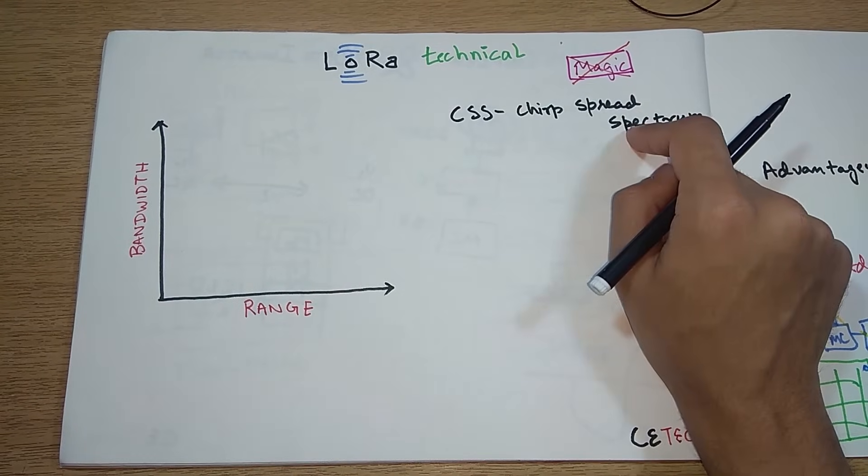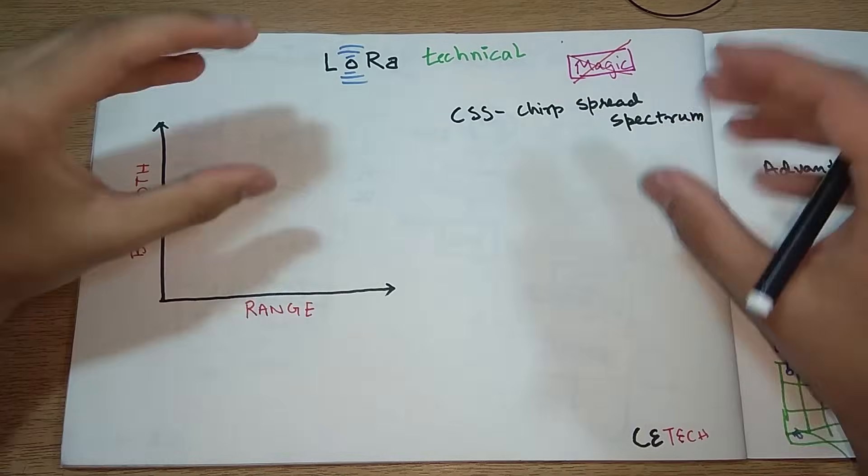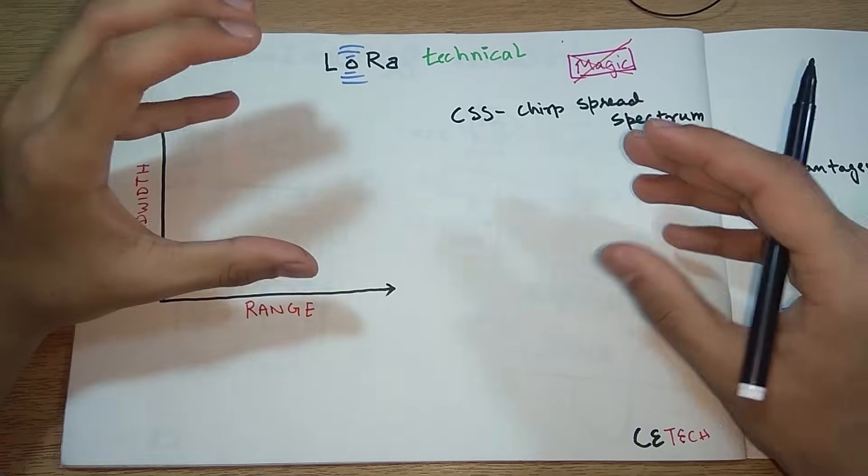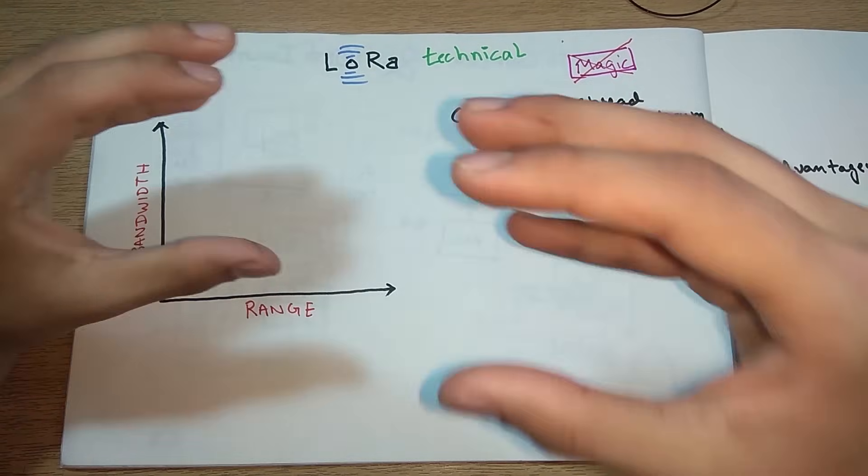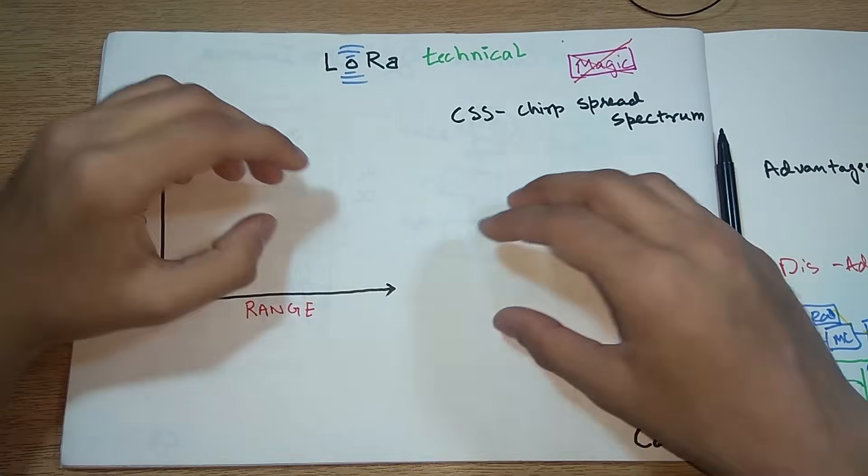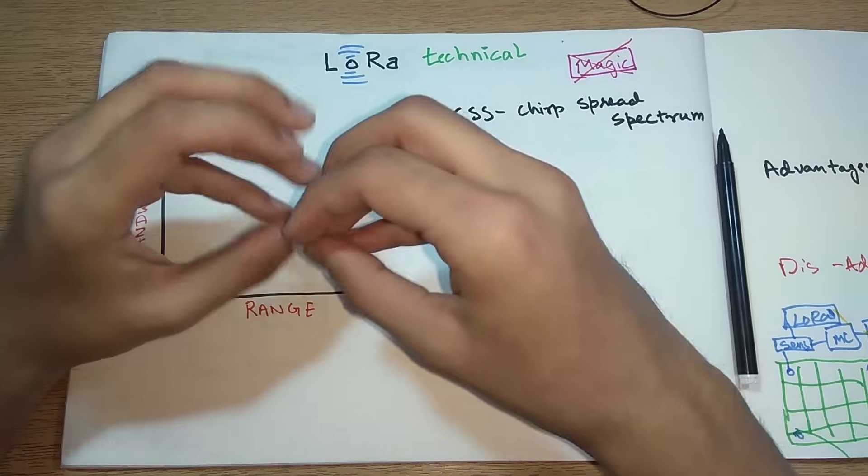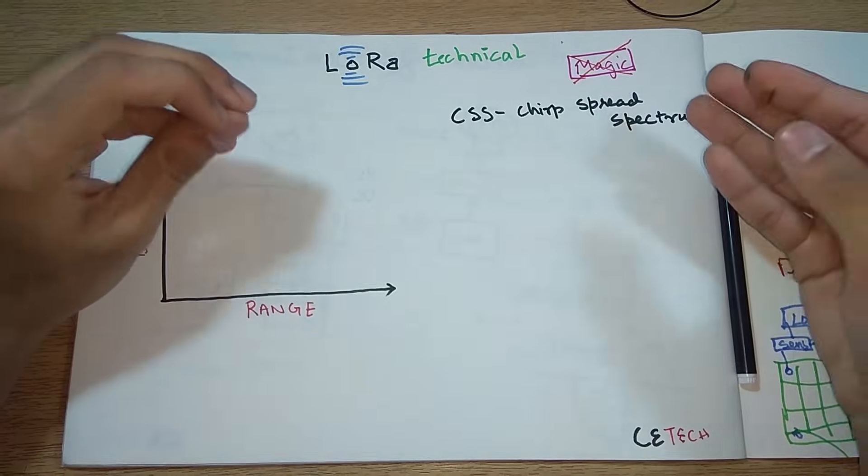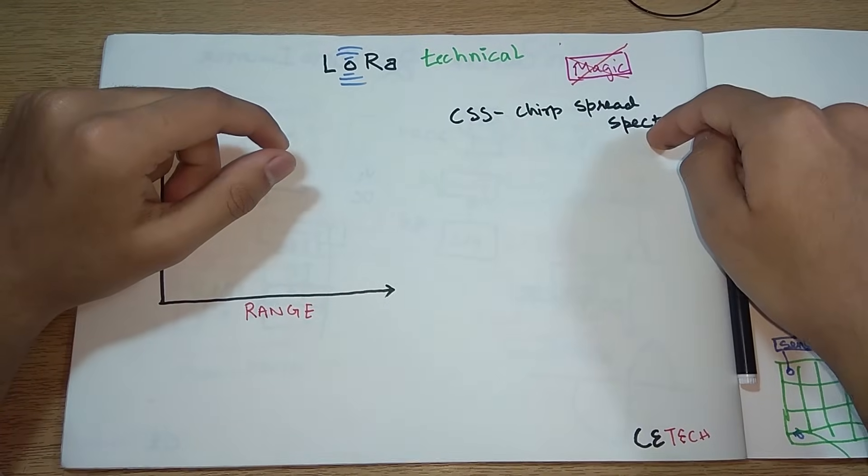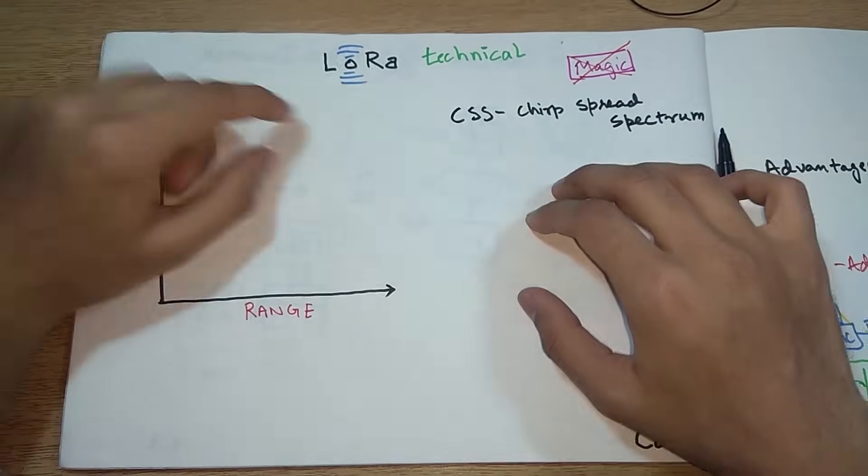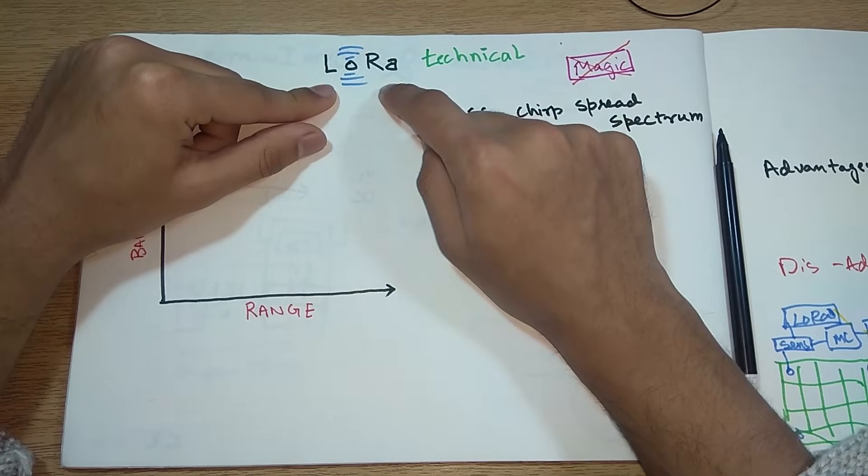The main thing behind it is CSS. CSS is Chirp Spread Spectrum. This is a modulation technique. Modulation is when the signal that you have is changed in such a way that it gives better features. Chirp Spread Spectrum or CSS is a modulation technique that is mainly used for LoRa.